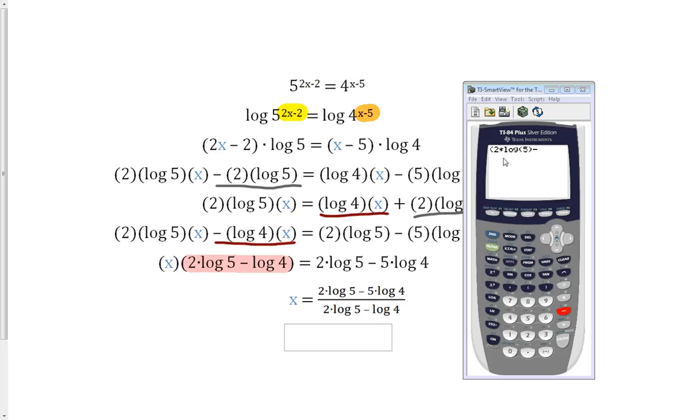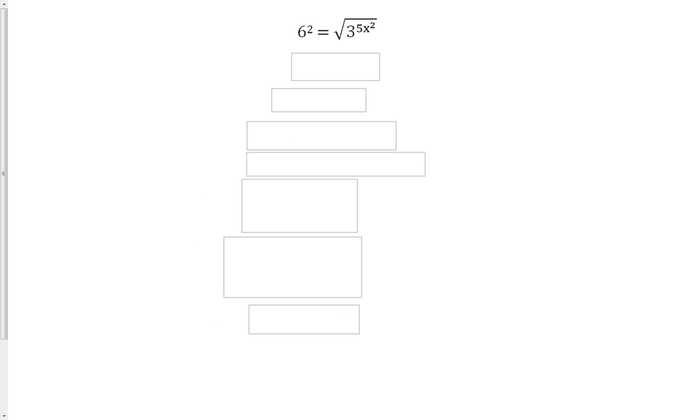I'm going to quickly punch this in my calculator. 2 times log 5 minus 5 times log 4, and then parentheses around my whole numerator divided by parentheses around my whole denominator. 2 times log 5 minus log 4. And that's going to give us the constant negative 2.02588. And left as a reduced decimal here, we're going to do negative 2.0259.